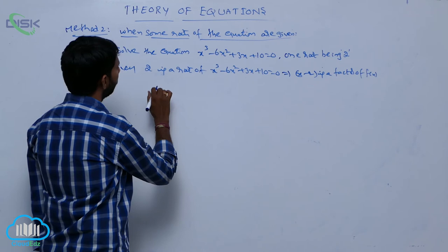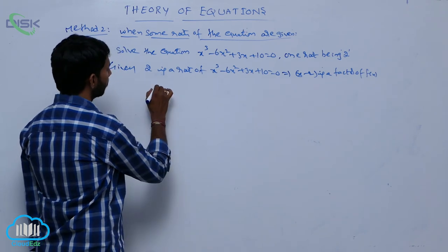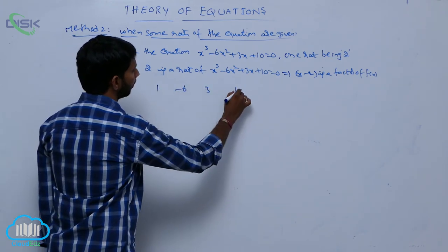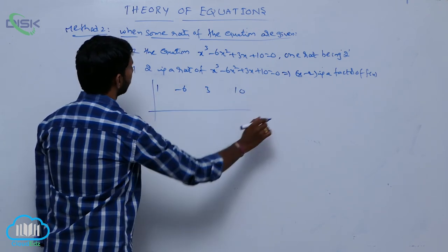Write the coefficients of the polynomial, the coefficients of the equation: 1, -6, 3, 10. Divide with 2.